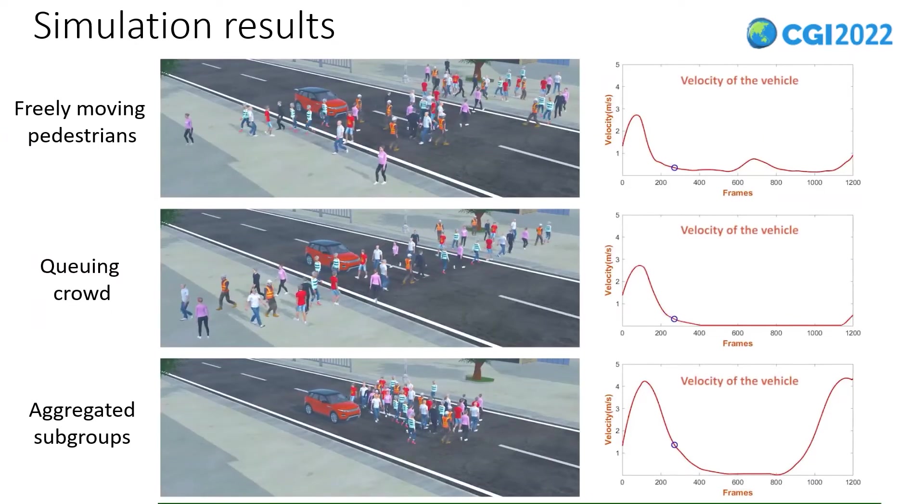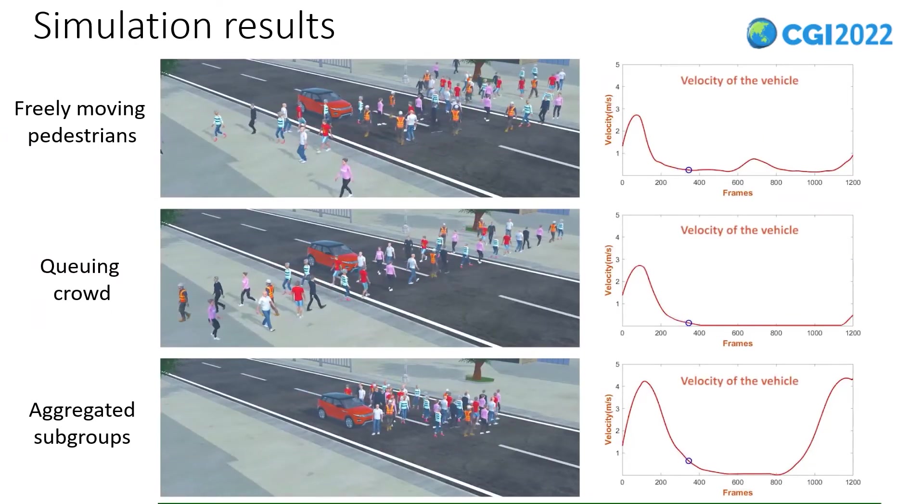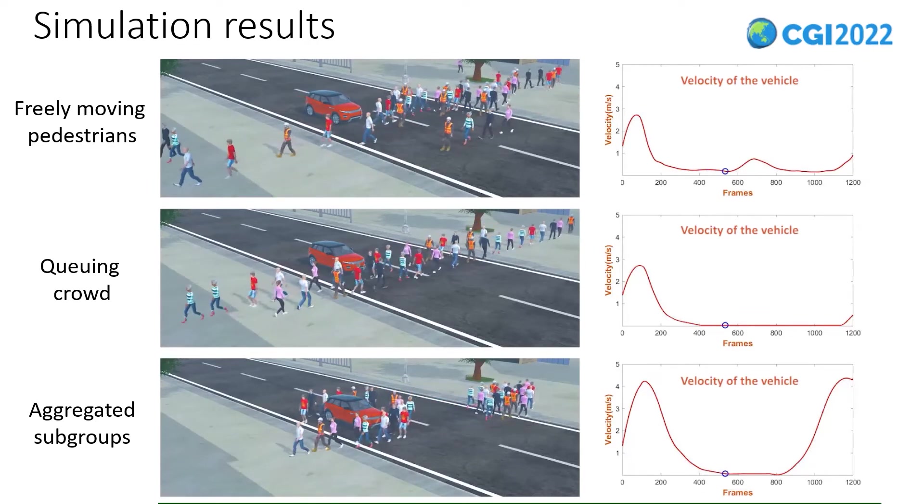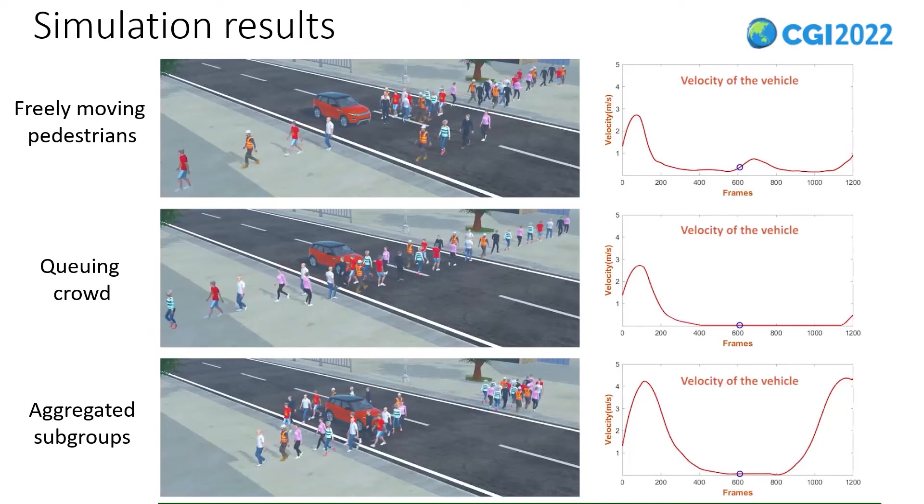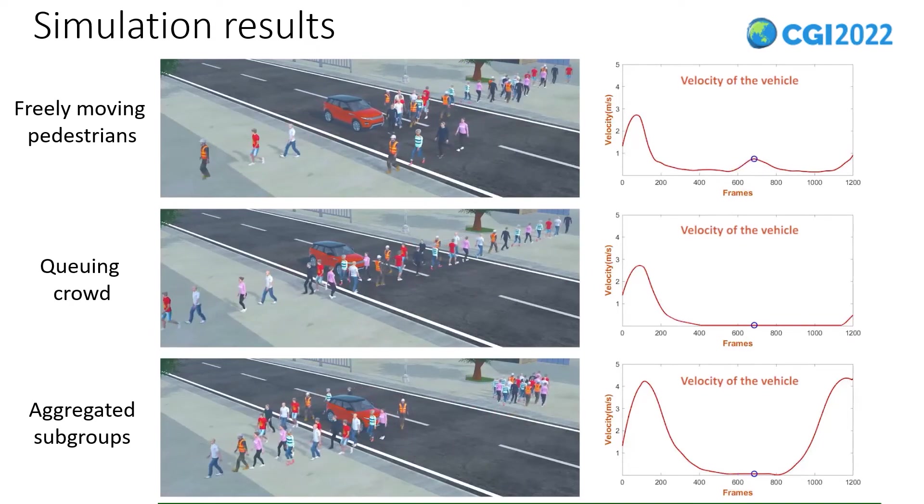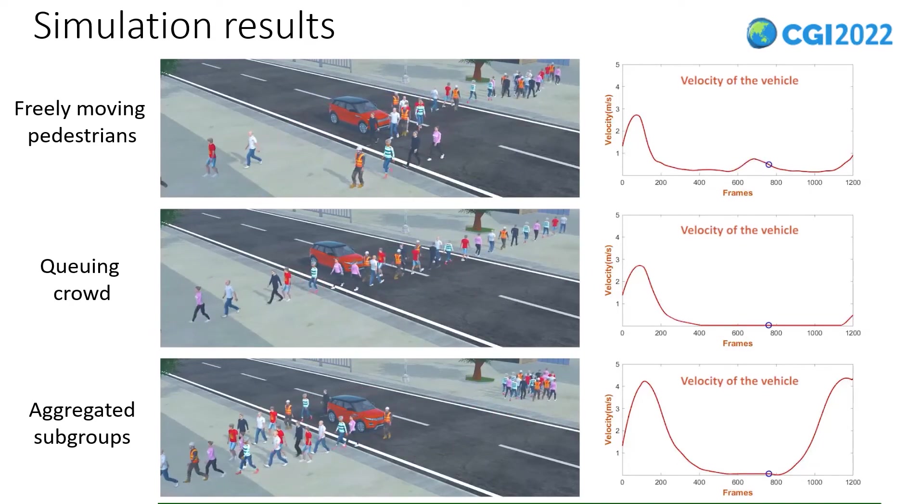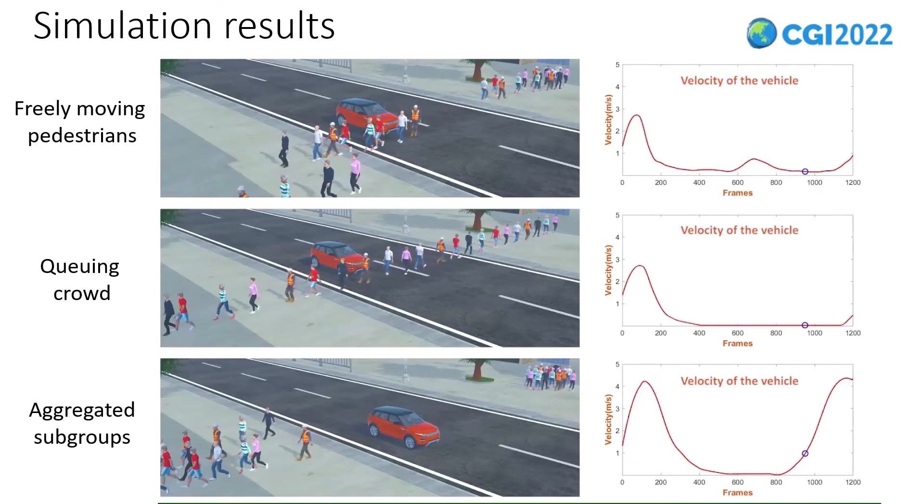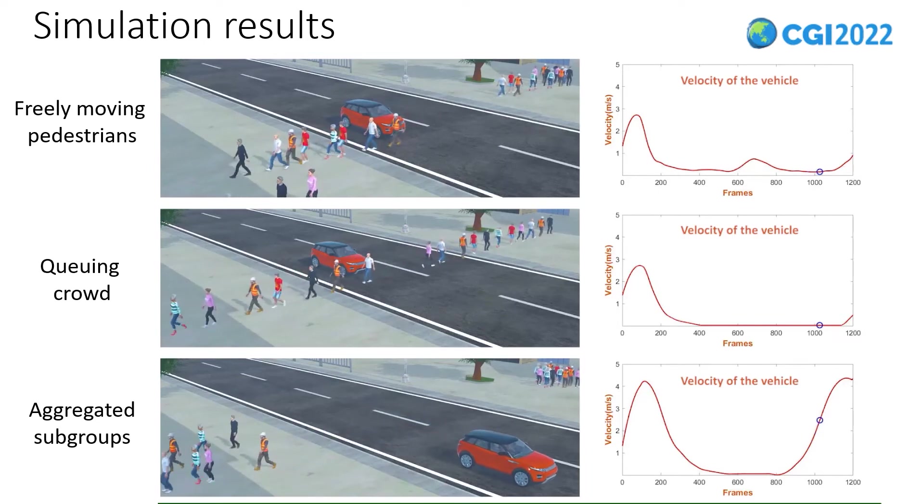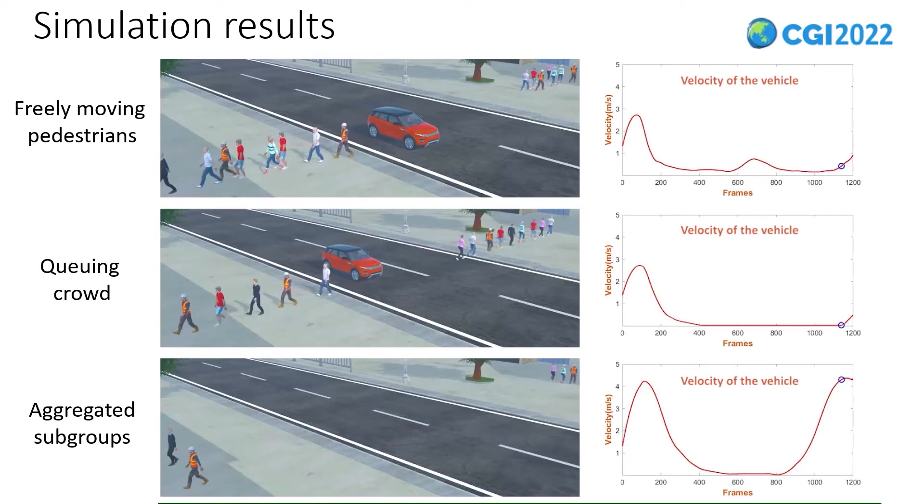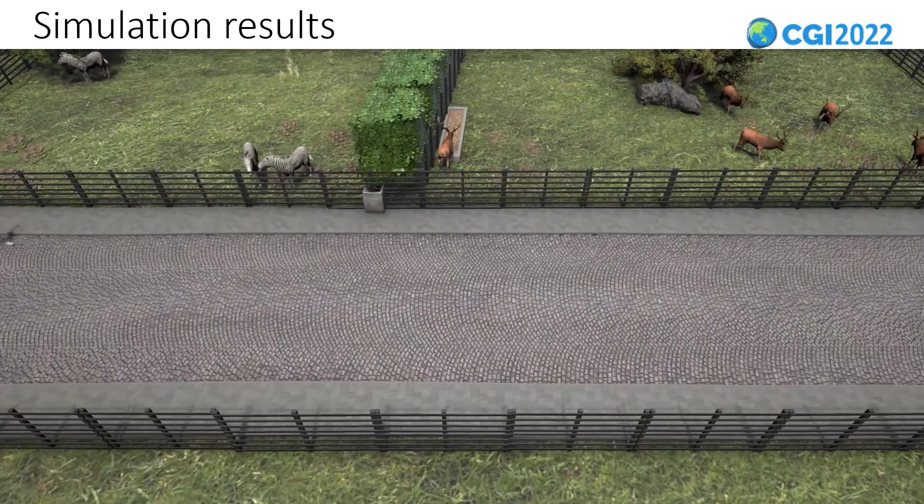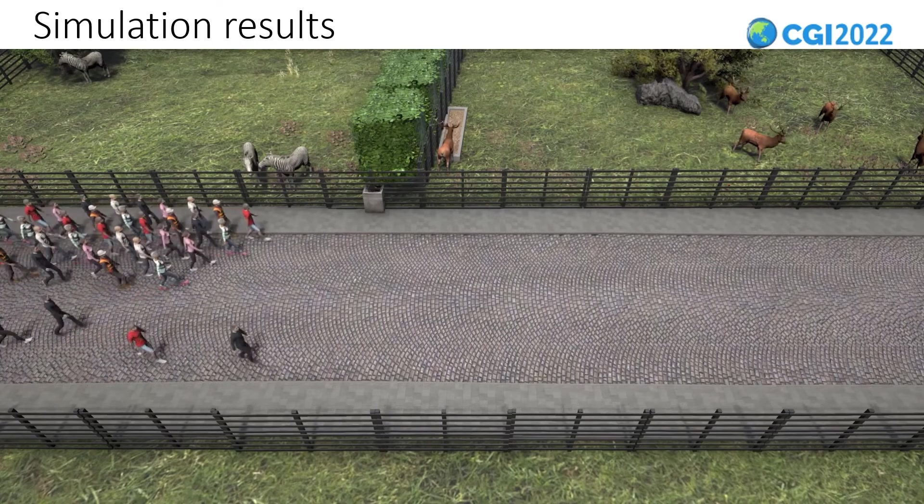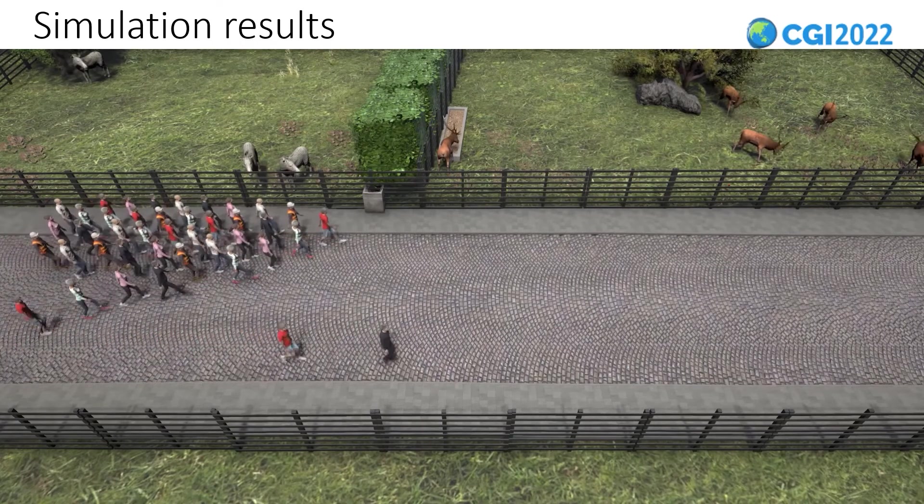Our method can be used in autonomous vehicle navigation tests. It can be seen that the decision-making of the autonomous vehicle varies when facing crowds with different movement patterns. Our method can also simulate crowd behavior in specific scenarios, such as visitors in a zoo and crowd form transformation.